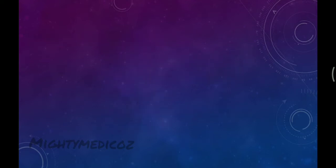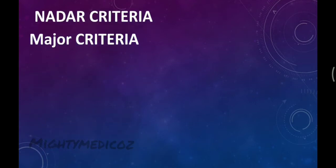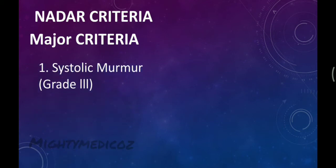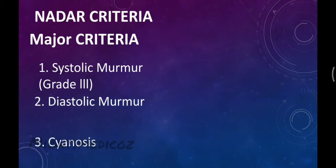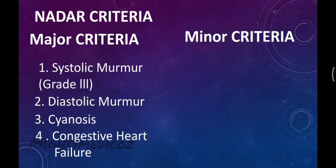We now discuss Nadas Criteria, used for the diagnosis of congenital heart disease. In Nadas Criteria, there are 4 major and 5 minor criteria. The 4 major criteria are: systolic murmur grade 3 or above, diastolic murmur, cyanosis, and congestive heart failure.